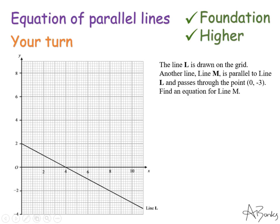Here's one of these questions for you to try. So I want you to find the equation of the line M, which is parallel to the line L, which is shown here on the grid, but it passes through the point 0 minus 3. If you pause the video now, you can unpause when you're ready to see the solution.